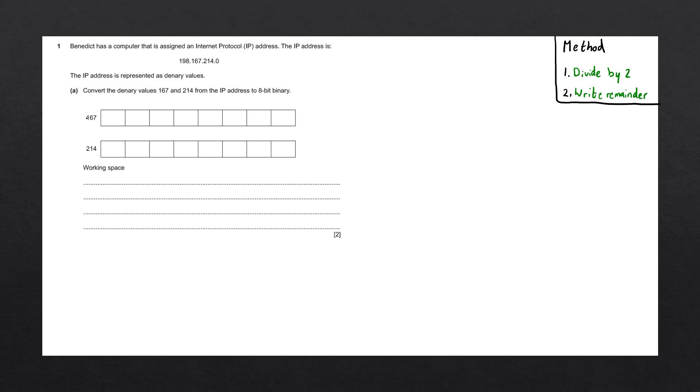So we're going to go through these individually, starting off with 167. To convert this denary number into a binary number, we have this method that I've written at the top right. We're going to be repeating these steps over and over again until we get zero. The first thing that we have to do is to divide our number by two.